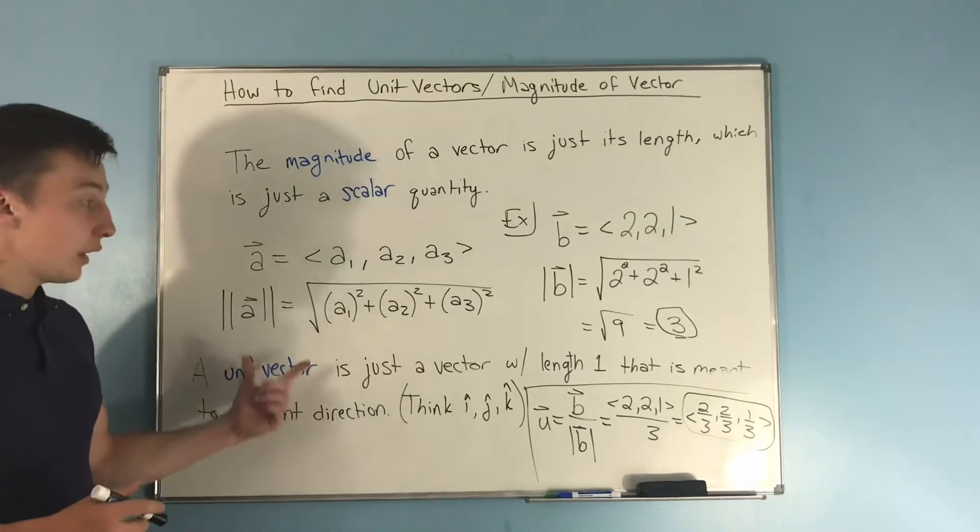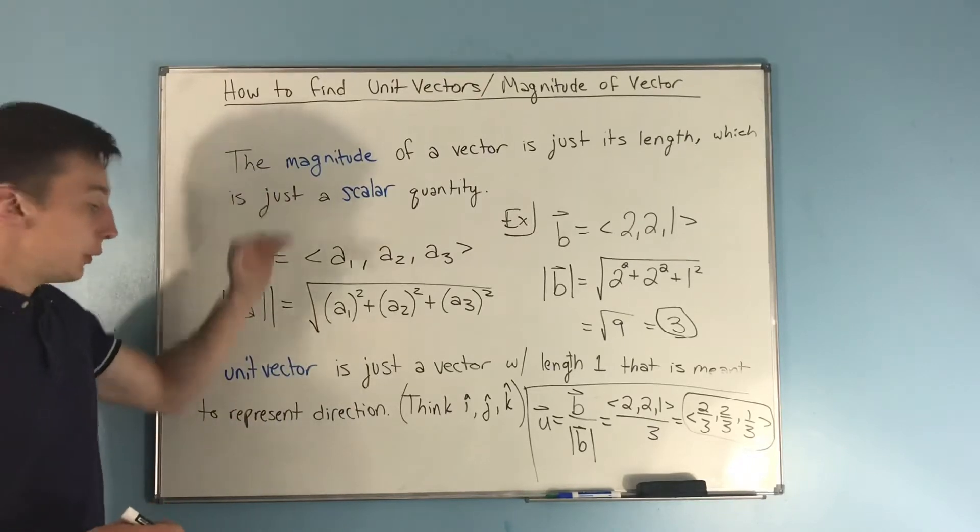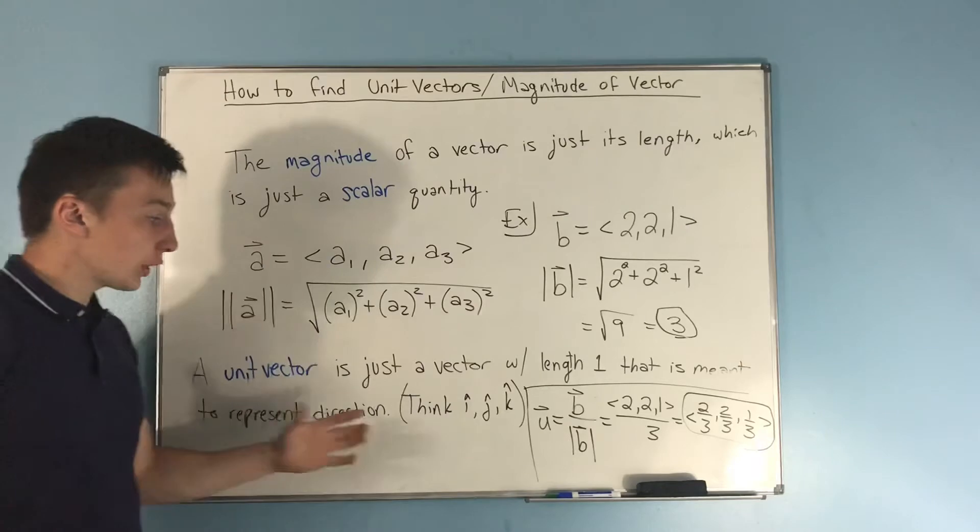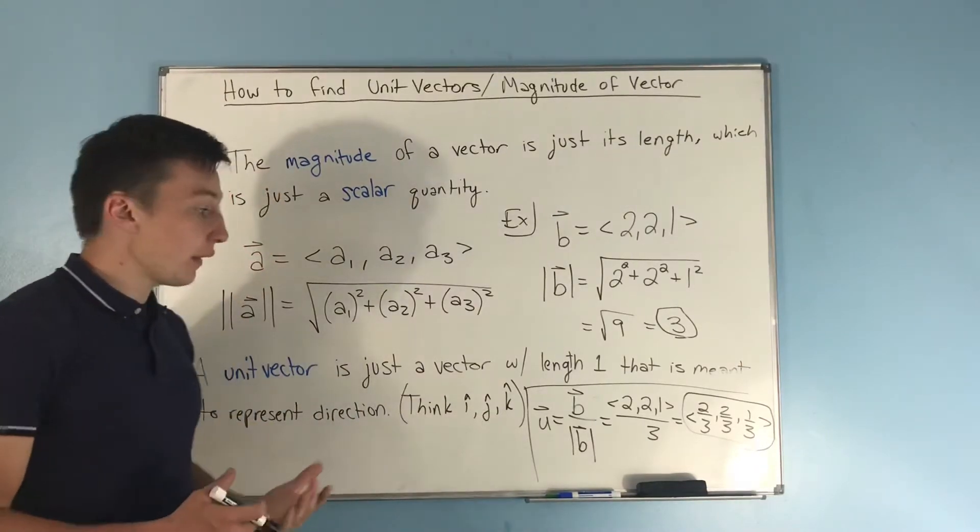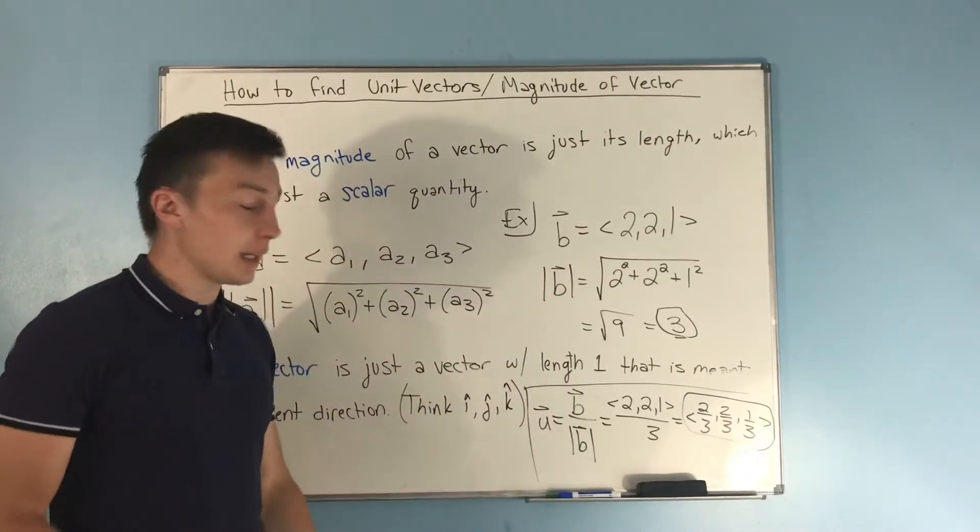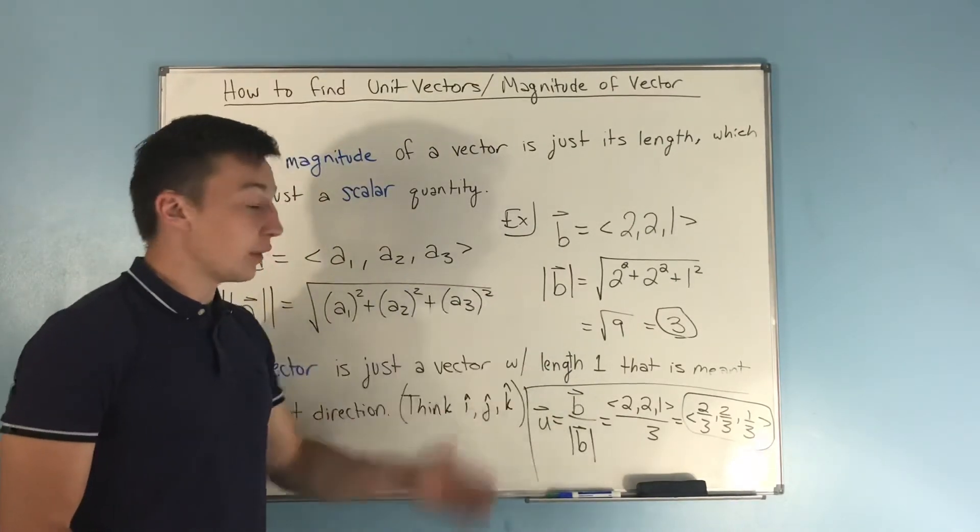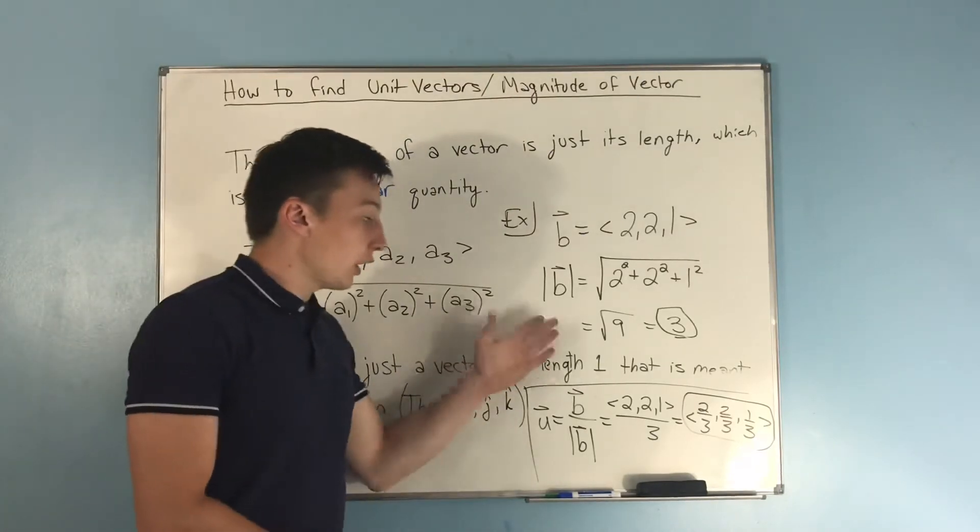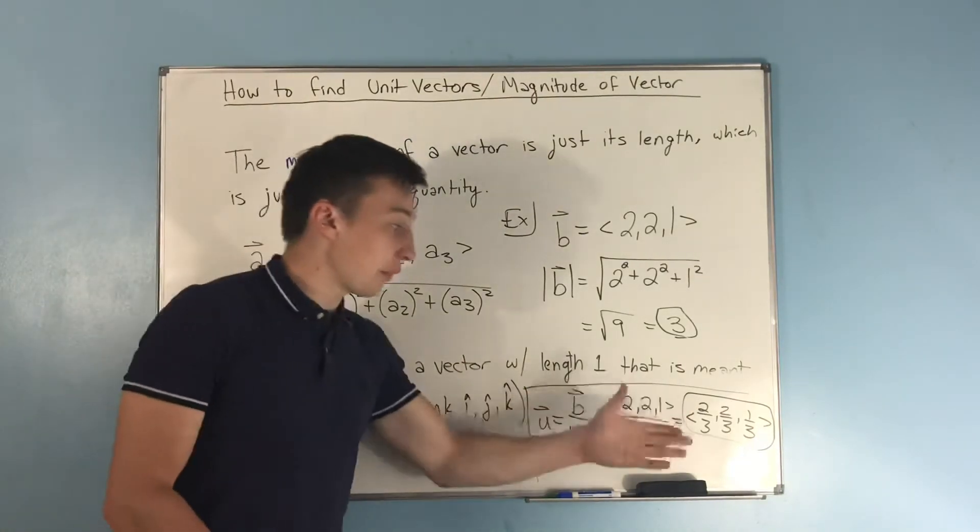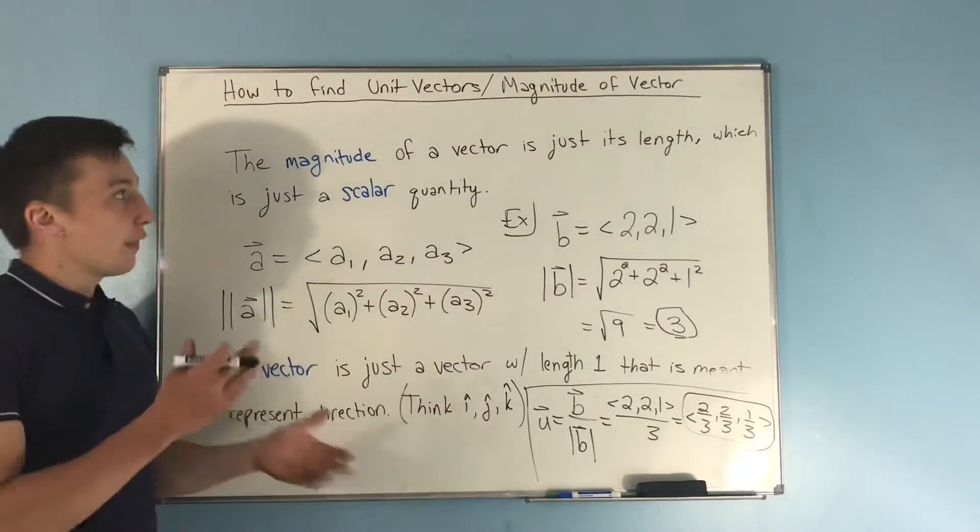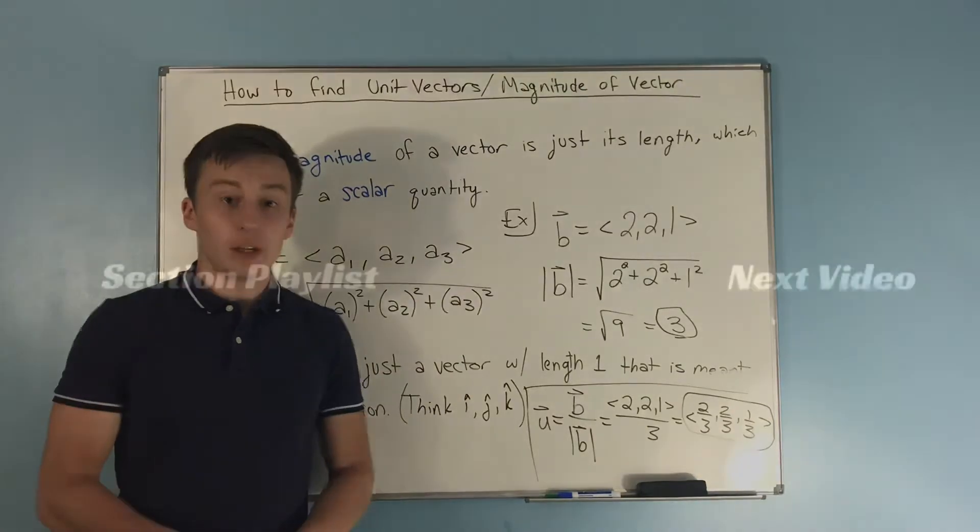For your unit vector, now we're talking about not magnitude but direction. We're talking about things like i hat, j hat, k hat. And how we find that is just taking our vector, in this case we had vector b, and we divided it by the magnitude of that vector. Because if we divide it by the magnitude of the vector, we get a vector with length 1, which is a unit vector. So that's kind of the whole idea, and that's going to do it for this video.